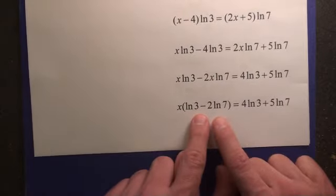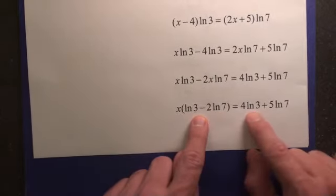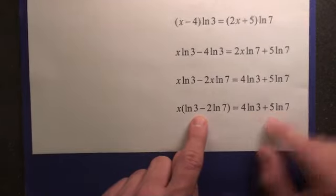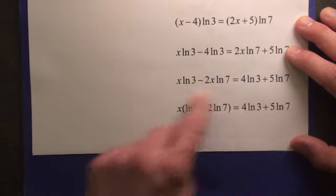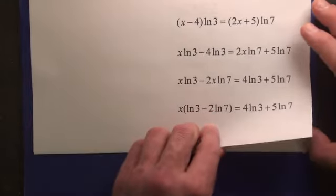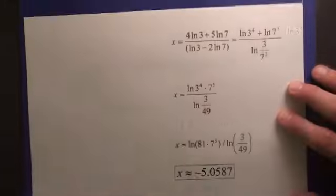Now you're going to have x times ln 3 minus 2 ln 7 equals 4 ln 3 plus 5 ln 7. Now you can divide both sides by this subtraction. So we're going to divide both sides by ln 3 minus 2 ln 7. That's going to give us this.